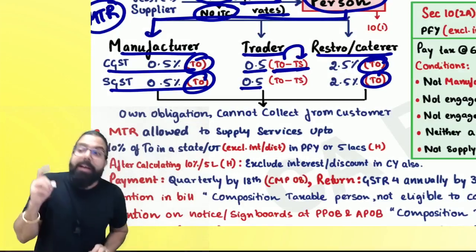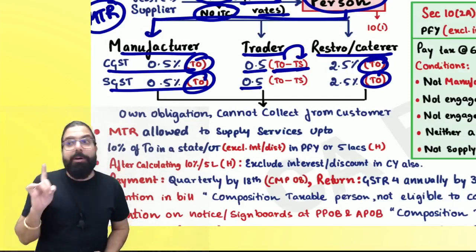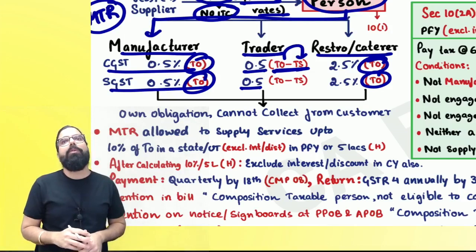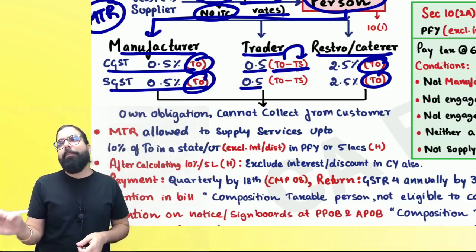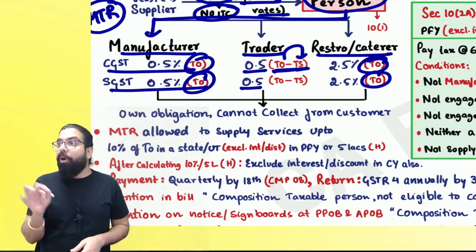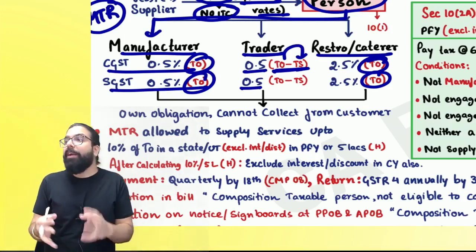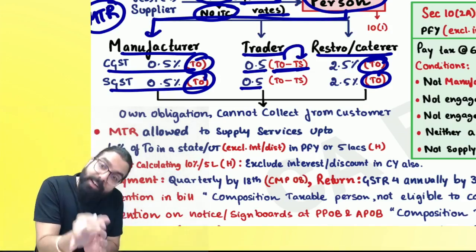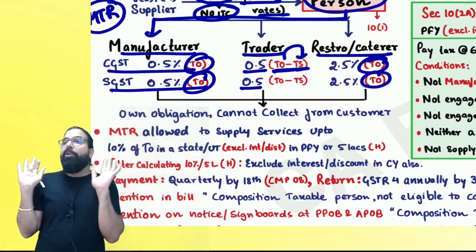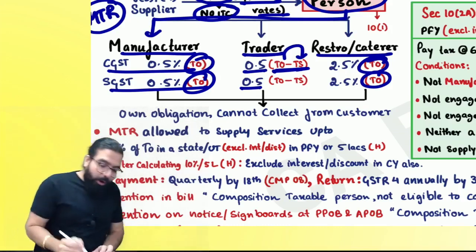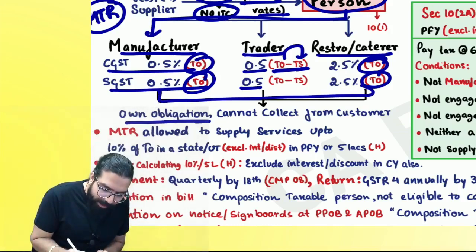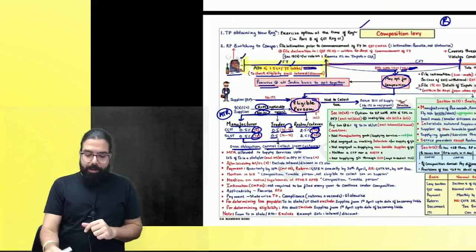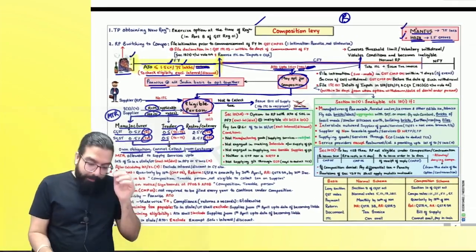Remember: manufacturer pays on total turnover, restaurant pays on total turnover, but a trader pays only on taxable turnover — the supplies on which tax actually applies. Whatever GST they pay is their own obligation — they cannot collect it from the customer, and they cannot take ITC.